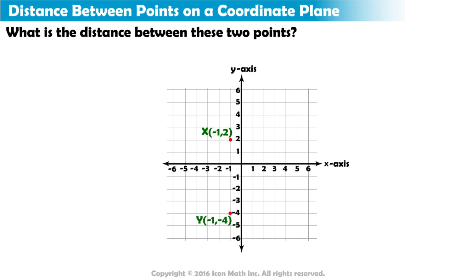These two points share the same X value. So to find the distance between them, we only need to count the distance between their Y values. Starting at point X, we must travel down 1, 2 spaces to get to the X axis. Then another 1, 2, 3, 4 spaces to get to point Y. The distance between point X and point Y is a total of 6 units.